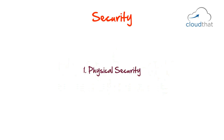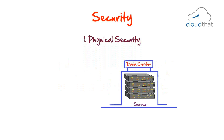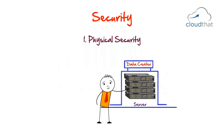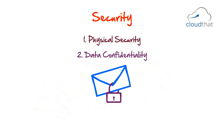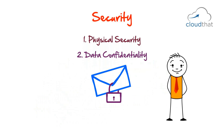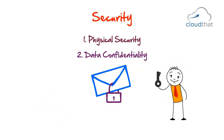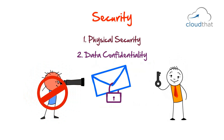The first kind of security is physical security, which makes sure that people cannot get physical access to your servers in your data center. The second is data confidentiality — data meant for certain people is only shown to them. People with proper privileges can access the data; for example, nobody should be able to read your emails except you.